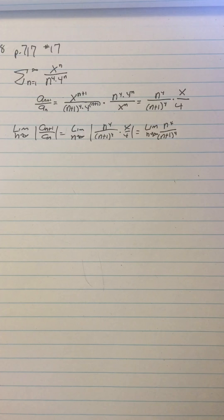I'm bringing that out of the absolute value because it's positive. And I'm also going to separate out the x over 4 from the limit because it doesn't have any n's in it. So I have absolute value x over 4.